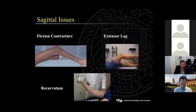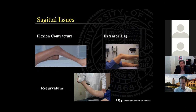In the sagittal plane, a fixed flexion contracture should key you in to being prepared to make a larger distal femoral resection, as well as the need to remove posterior osteophytes and perform an aggressive posterior capsular release. Conversely, with recurvatum, one has to be mindful of the extension gap and be conservative with that initial distal femoral resection. In cases of polio plus recurvatum, a primary hinge knee replacement should be considered. While quad weakness is probably the most common cause of extensor lag, the etiologies are multiple, and the reasons should be further worked up before entertaining surgery.